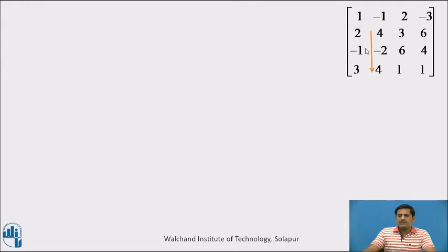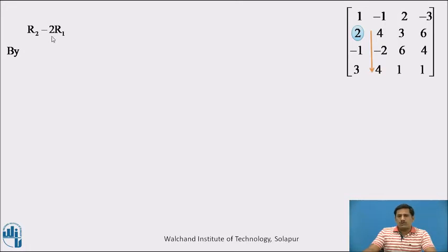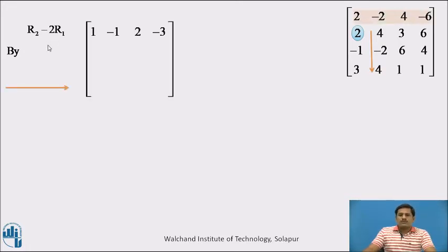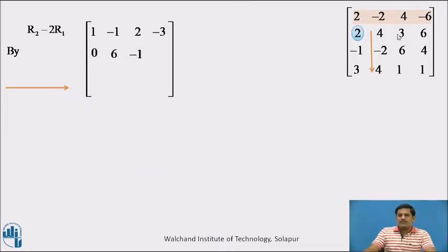To convert this 2 to 0, we will use the row transformation R2 minus 2R1. When we multiply row number 1 by 2 we get all these entries, and now doing the subtraction: 2 minus 2 is 0, 4 minus minus plus 2 is 6, 3 minus 4 is minus 1, and 6 minus of minus 6, that is plus 6, we get 12.